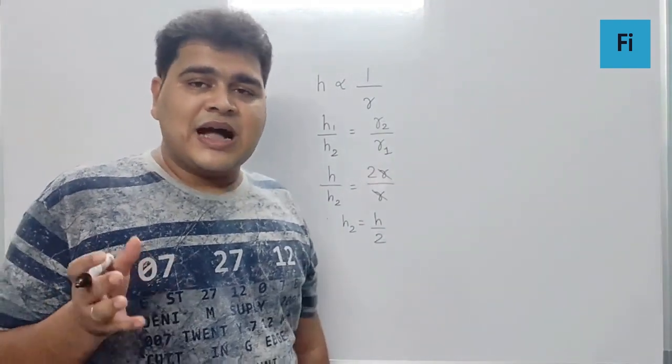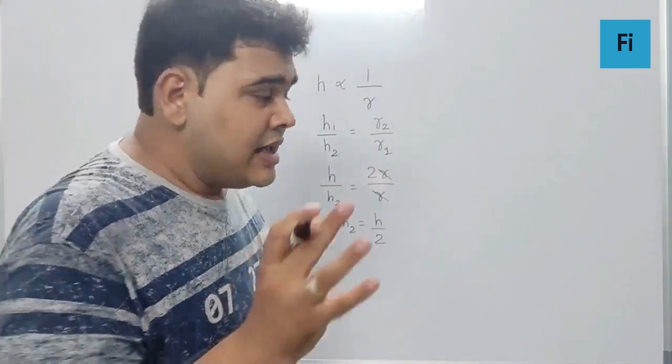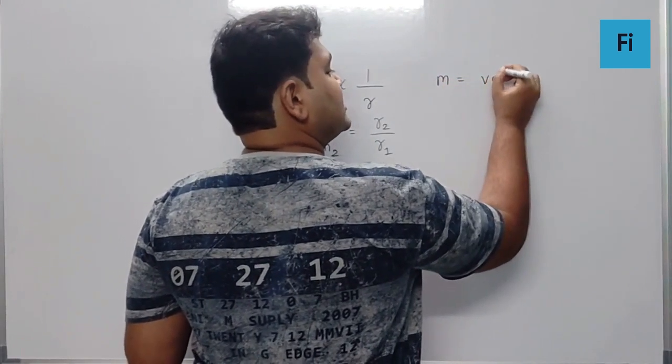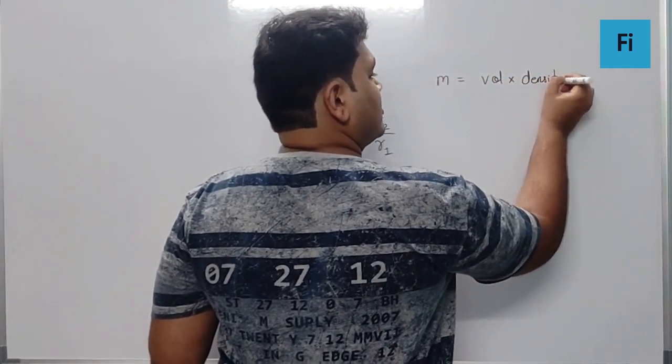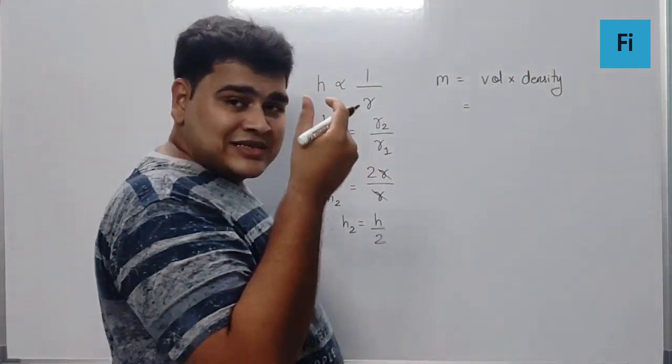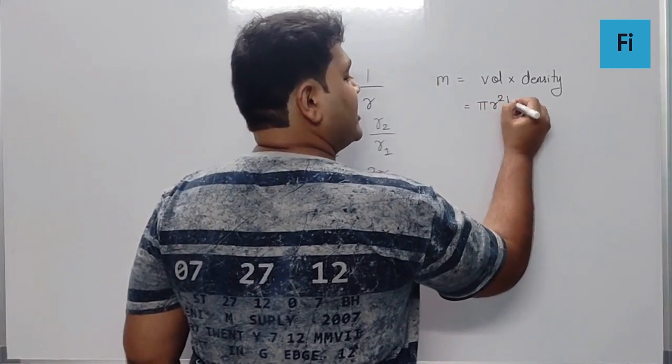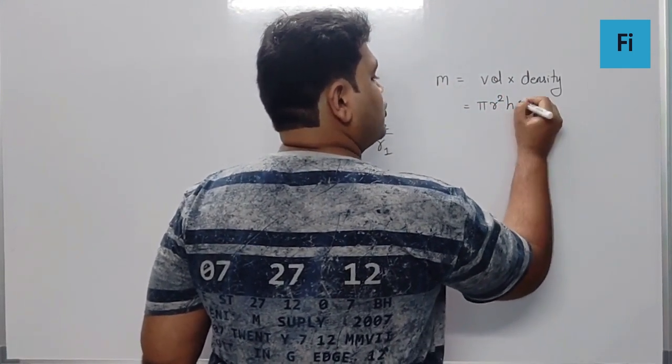Now here they have not asked us the height, they have asked us the mass. How can we relate mass with height? We can say mass is volume into density, and for the capillary which is cylindrical, I can say the volume is going to be πr²h and density as ρ.